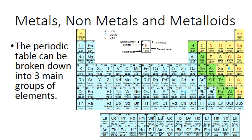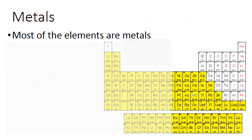The Periodic Table can also be broken down into three main groups of elements. So the three main groups are metals, nonmetals, and metalloids. So the first group we're going to look at here is the metals, and most of the elements on the Periodic Table are metals. So all of the yellow colored elements here on this table, those are all metals.